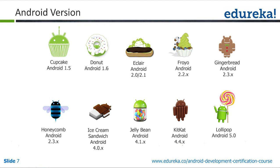Answering a question on what a native application is: a native application is one we create in Java. Cross-platform applications are always created in HTML programming. In this course we will see how to create applications in the native programming language, which is the Java programming language — native to the Android device.